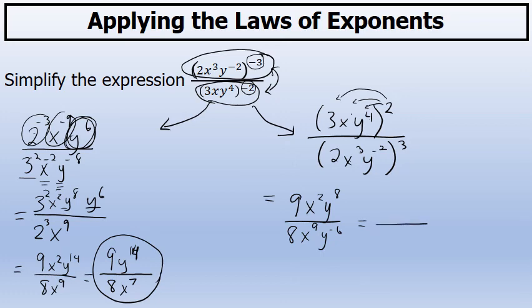At this point, it is important to note that there are factors of x in the numerator and denominator, and I will subtract the exponents. Nine minus two is seven, leaving me with x to the seventh power in the denominator.